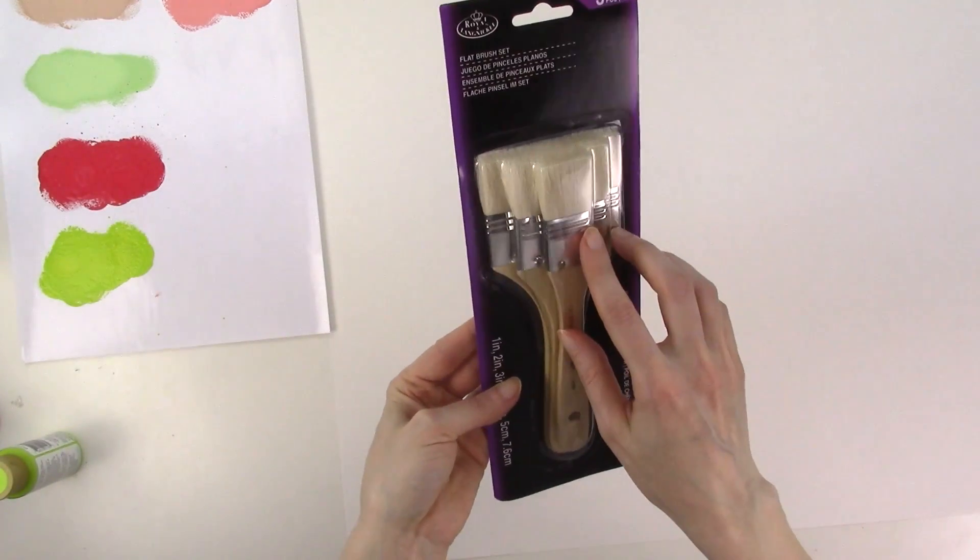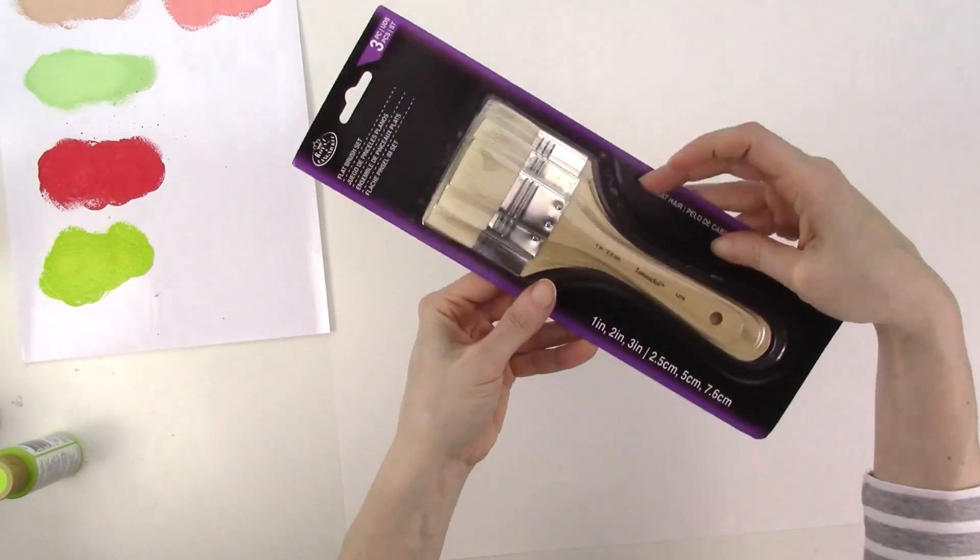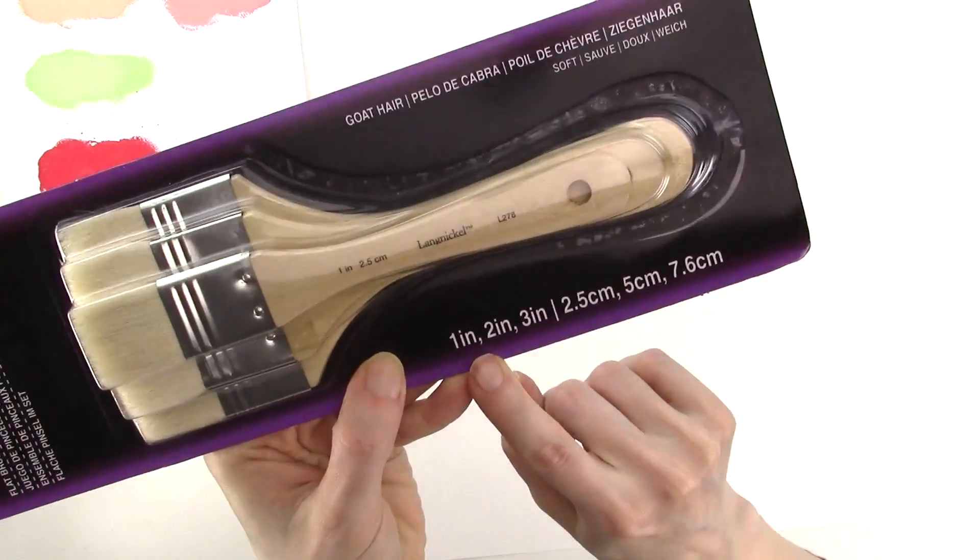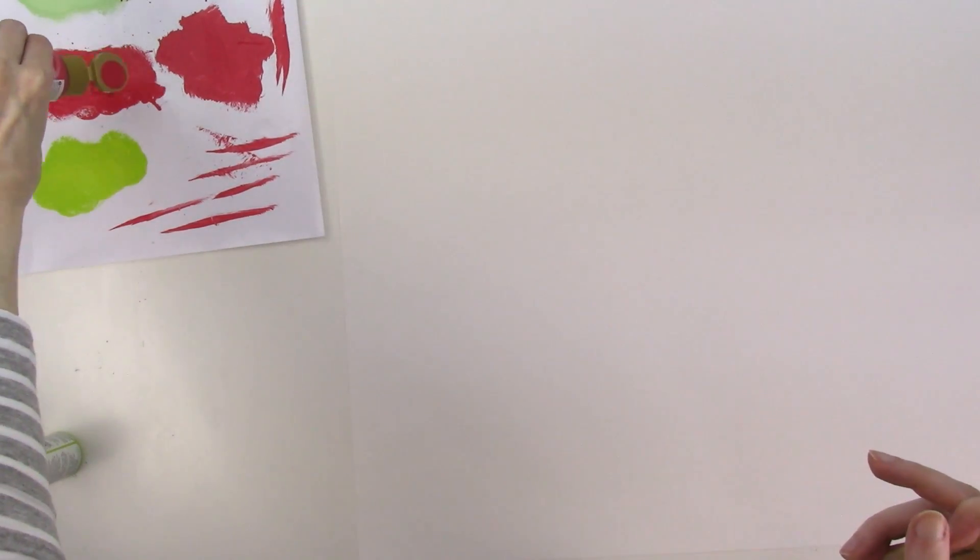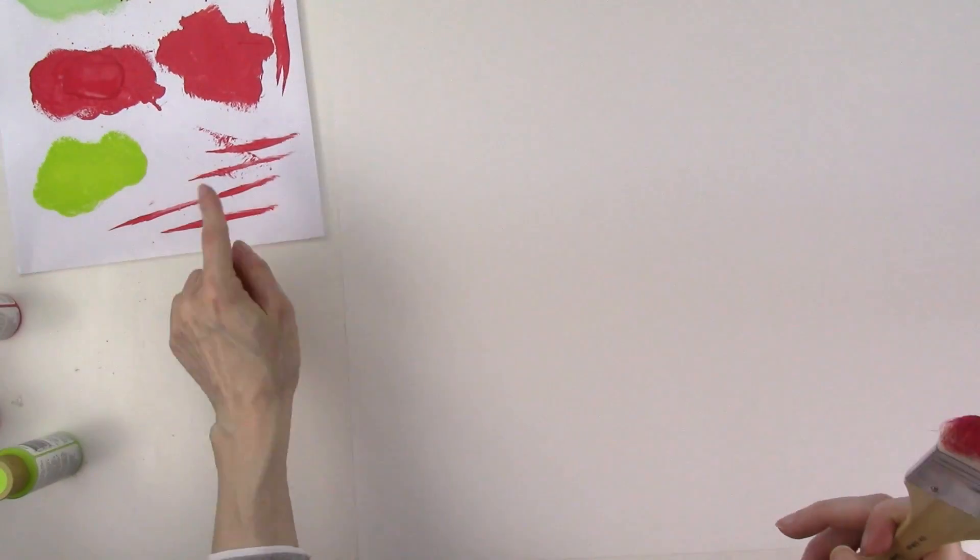For the remaining designs, I'll be using these flat brushes from Royal Langnickel. The set includes 1, 2, and 3 inch brushes. For this design, I'll be using the 2 inch brush and a single paint color. This is by far the quickest to make of the 3 designs that I'll be showing in this video.